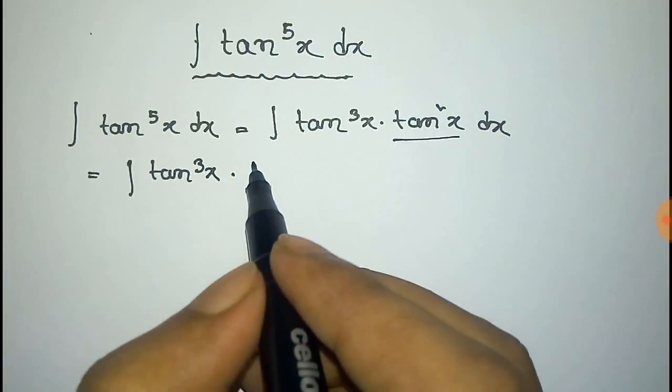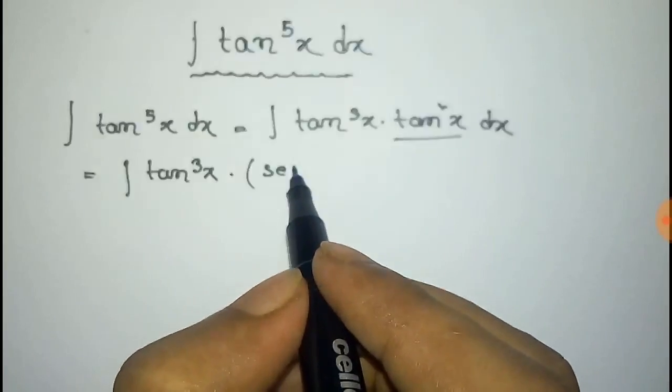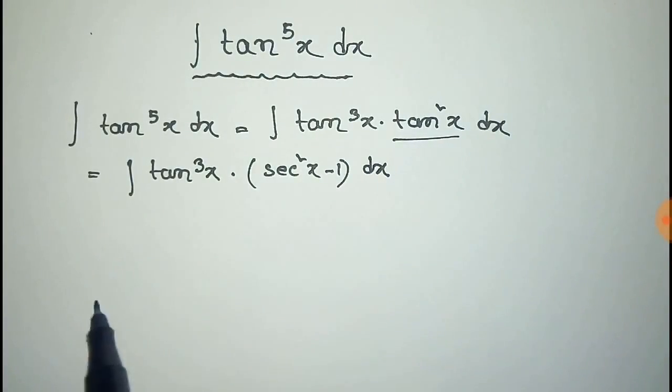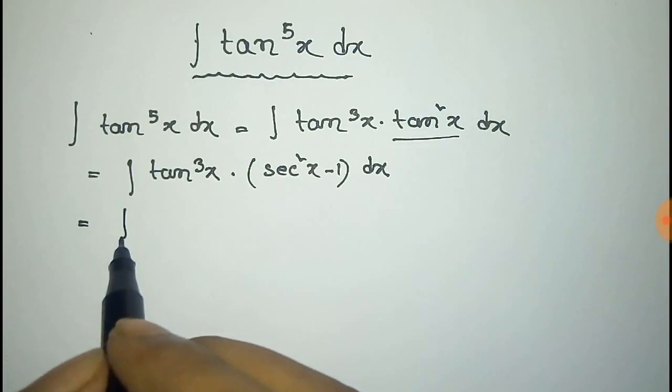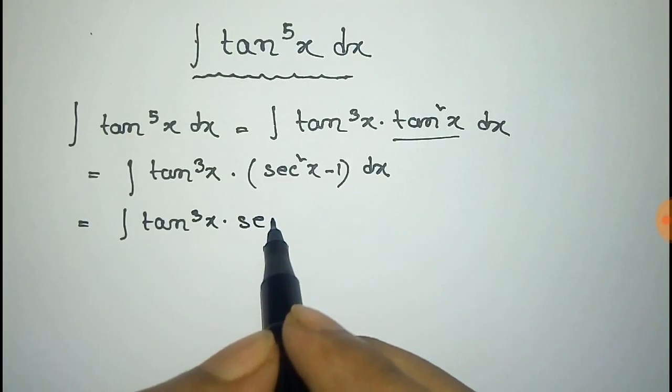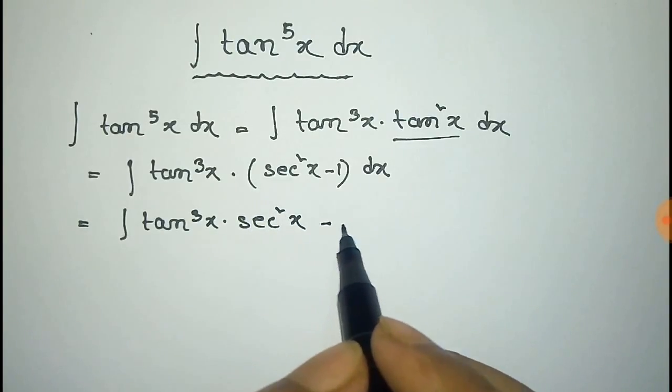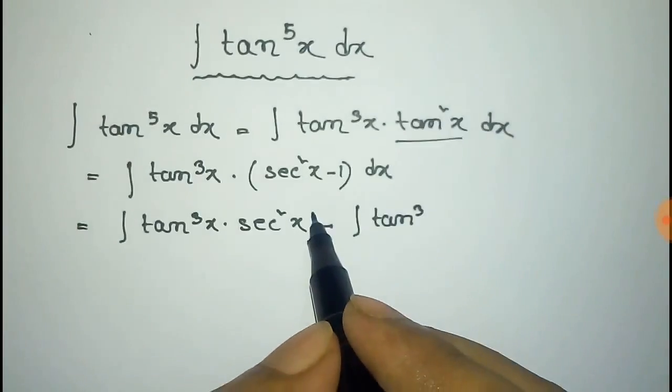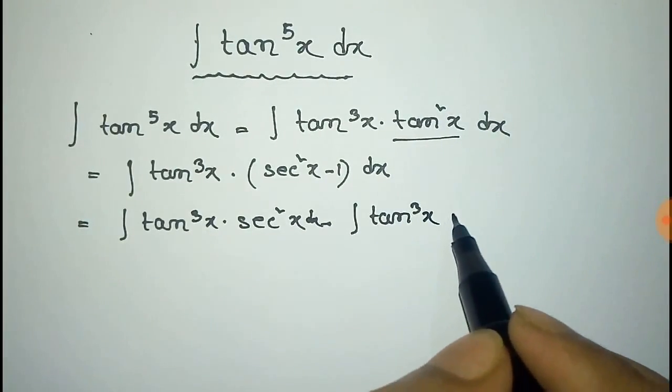Now this tan square x can be written as sec square x minus 1 into dx. Now to multiply this tan cube x with this, so it will be tan cube x sec square x minus dx, minus integration of tan cube x dx.